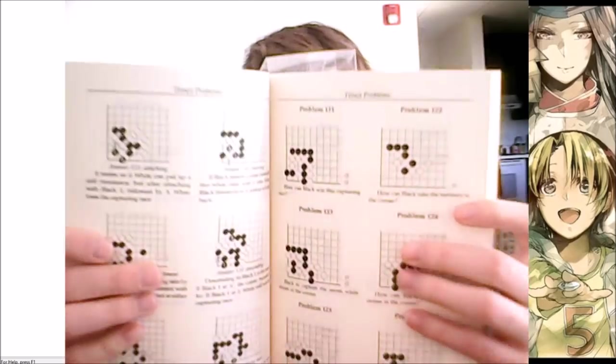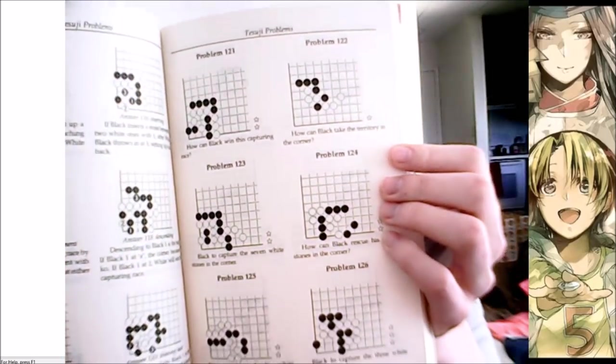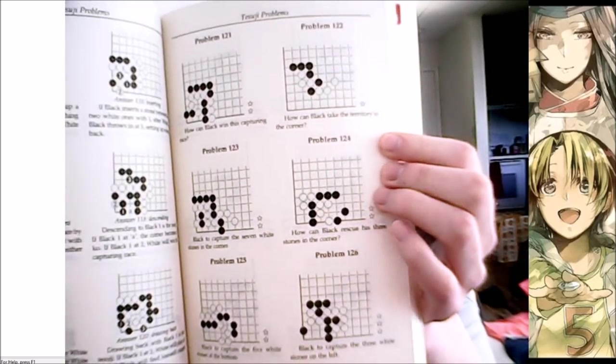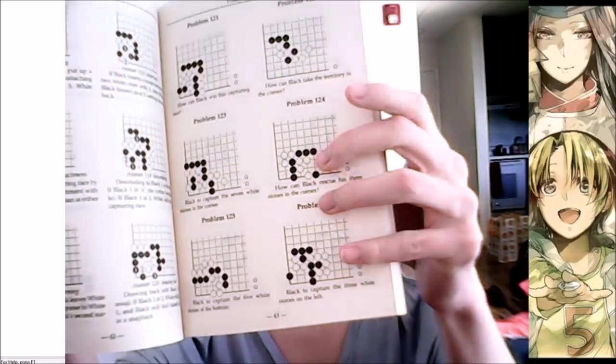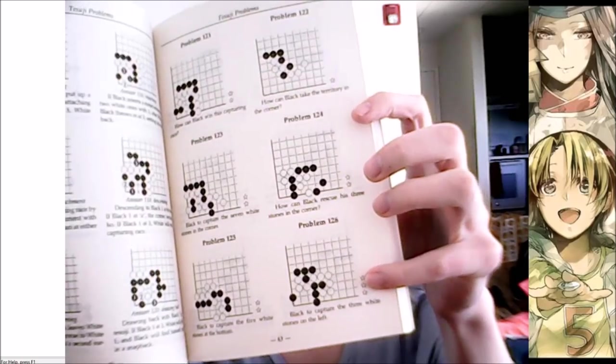And this book is awesome because, like every other book in the Get Strong series, it's completely problem-based and you learn by studying and doing the problems. Problems are structured just like this. You have six problems per page and they are separated into stars: beginner, medium, and then three stars is the most difficult.